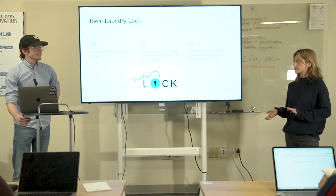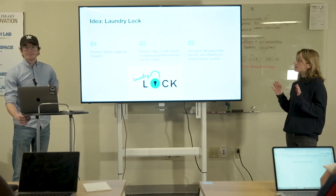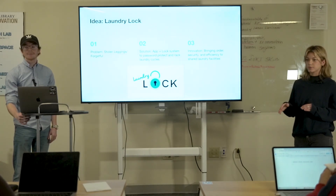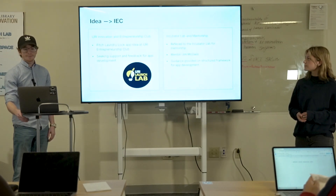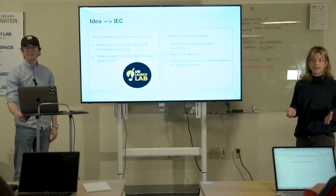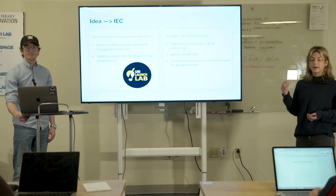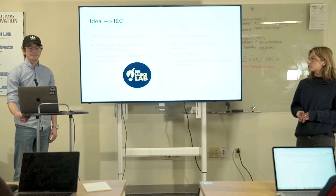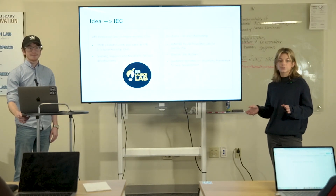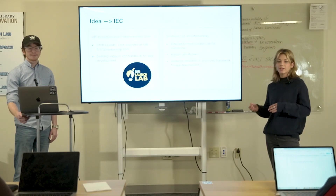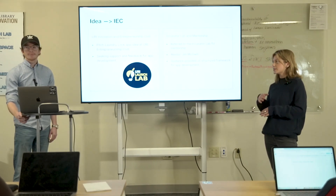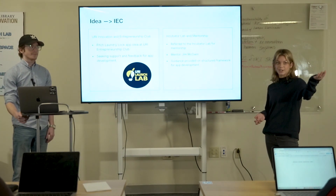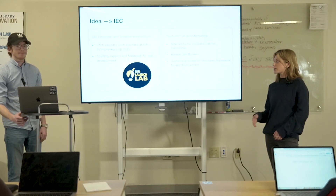Laundry Lock is an app and lock system, and it allows you to password protect your laundry as well as track your cycle so you know when it's ready. I had this idea back in freshman year, but it wasn't until back in October of this year that I brought my idea to IEC, which is Innovation and Entrepreneurship Club here at URI. It's a great club for fostering creativity and innovation — very welcoming group. I told my idea to the club, was referred to the incubator lab, got a mentor, which is Jim, who's been amazing in assisting me throughout this process.